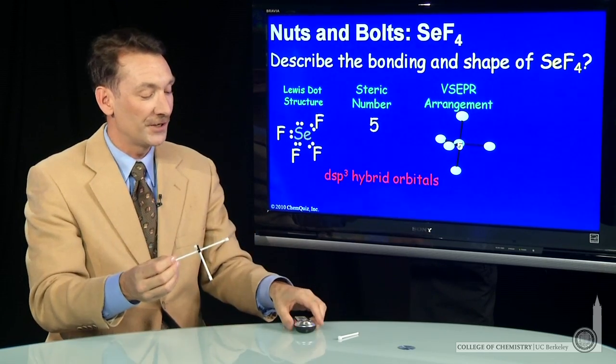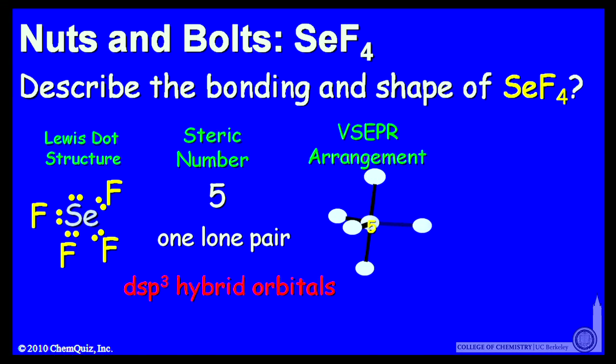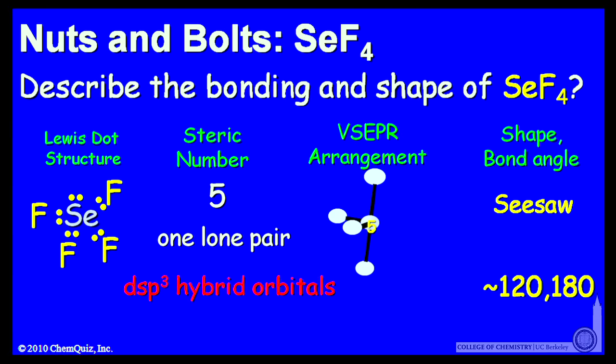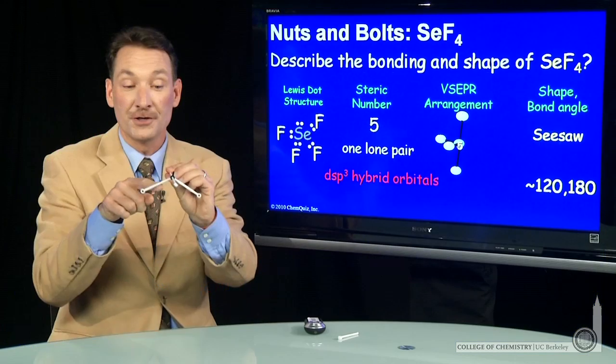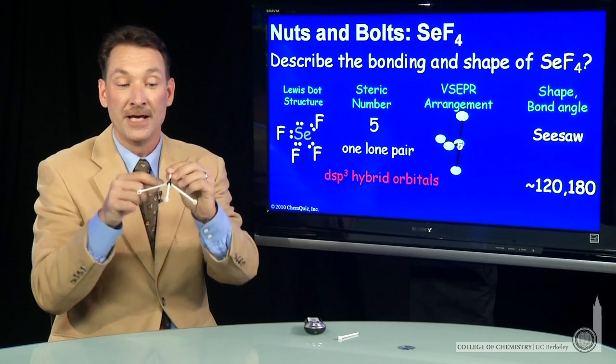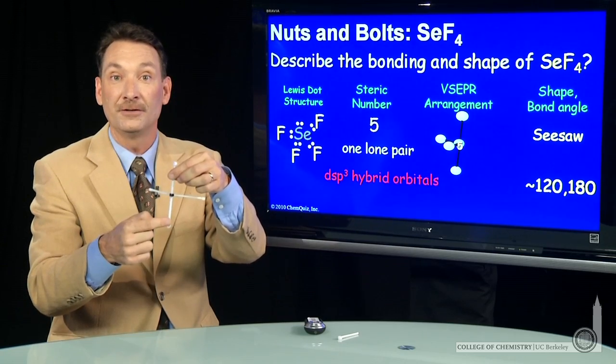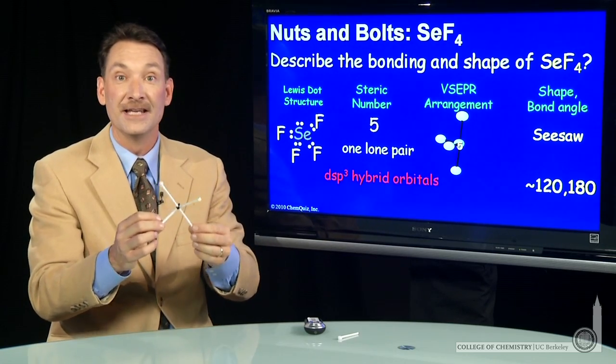So a seesaw configuration, and I'll have two bond angles. I'll have a bond angle of 180 degrees and a bond angle of 120 degrees. So 120 degree bond angle and 180 degree bond angle for the fluorines in SeF₄.